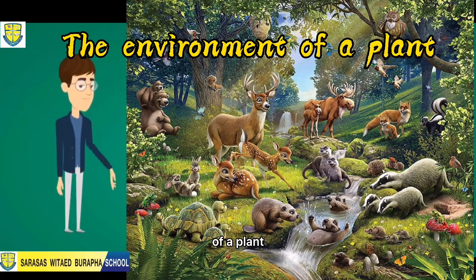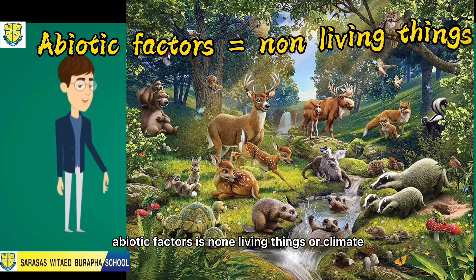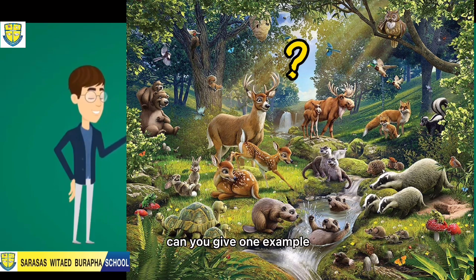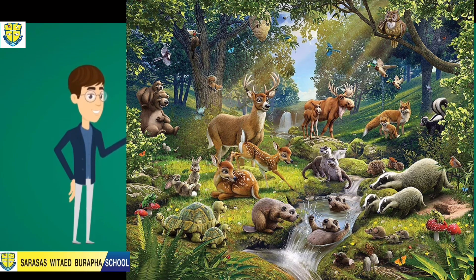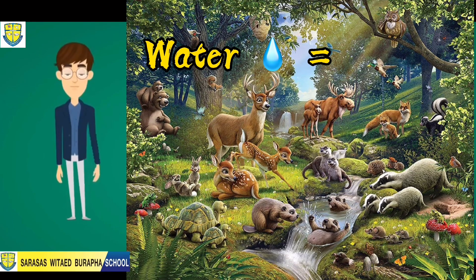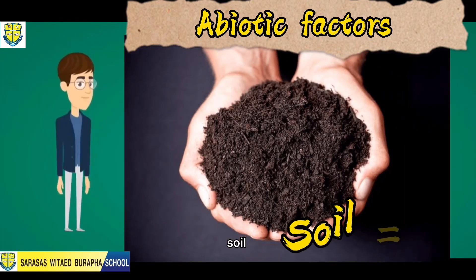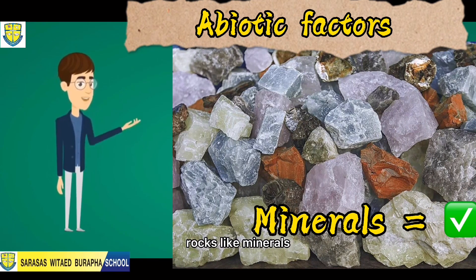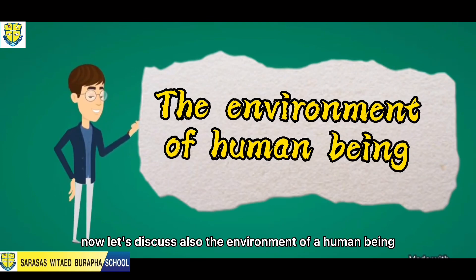Let's go back to the picture of the environment of a plant. What are the abiotic factors in this picture? Abiotic factors are non-living things or climate. If you answered water, your answer is correct. Other examples of abiotic factors are sunlight, soil, temperature, and even rocks like minerals.